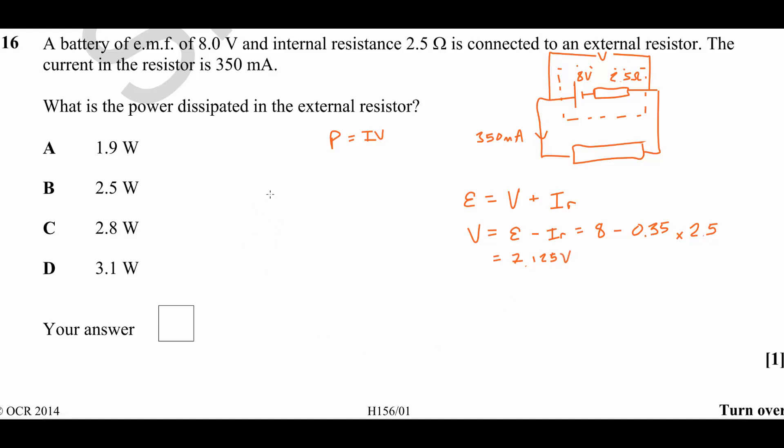Now we can use P equals IV, so our current, 0.35 amps, multiplied by 7.125, gives us a power of 2.49 watts, which is approximately 2.5 watts. So that is answer B.